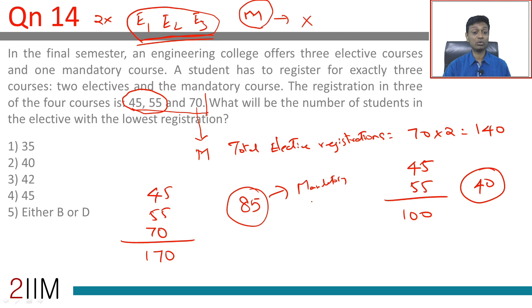What will be the number of students in the elective with the lowest registration? This is a possibility: lowest registration being 40, this is the answer we are looking for. Or we could have this scenario where the lowest registration is this elective which is 45.